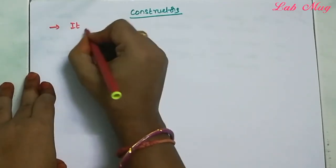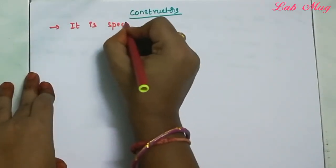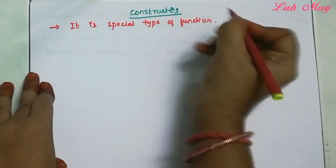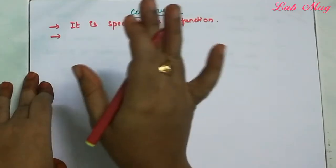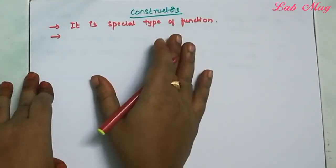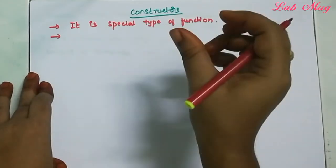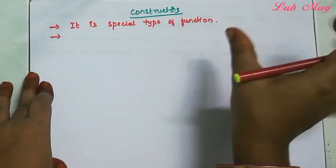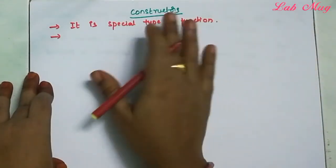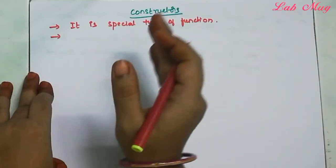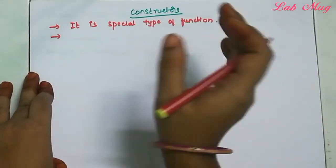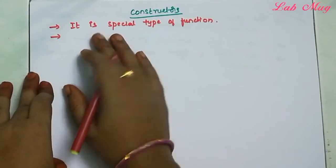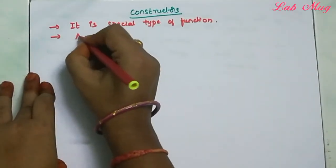A constructor is a special type of function. Constructors are methods, but unlike regular methods which can have user-defined names, constructors must have the same name as the class.